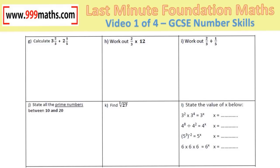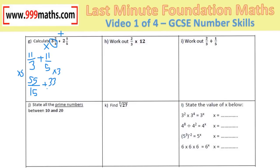Converting both mixed numbers to improper fractions by multiplying and adding gives 11 over 3 plus 11 over 5. Getting common denominators by multiplying the first fraction by 5 and the second by 3 gives an answer of 88 over 15. To simplify: 88 divided by 15 is 5 remainder 13, giving 5 and 13 fifteenths.